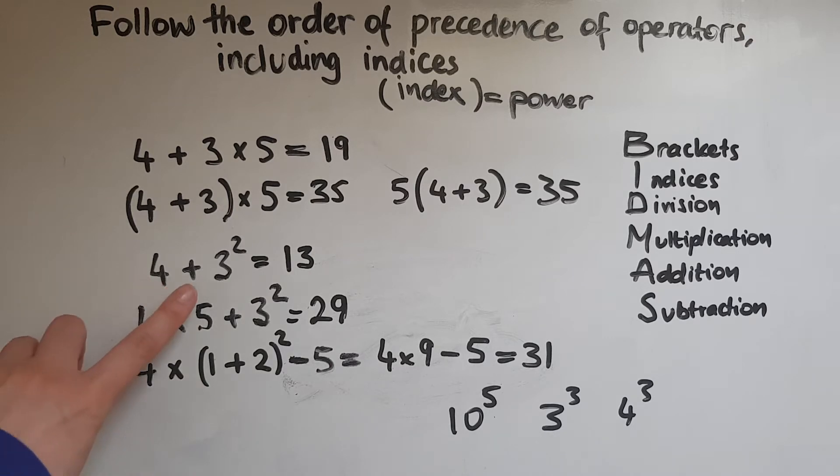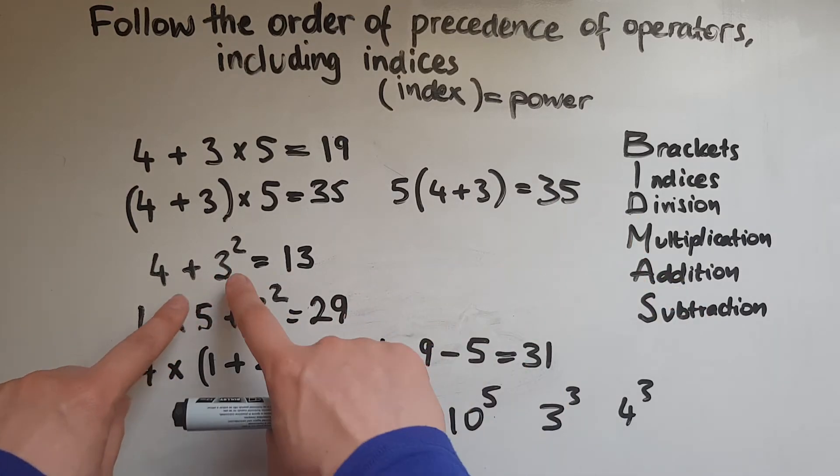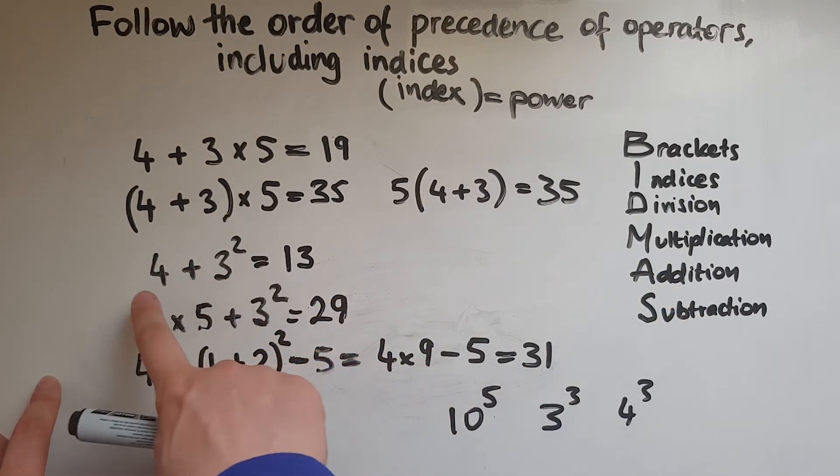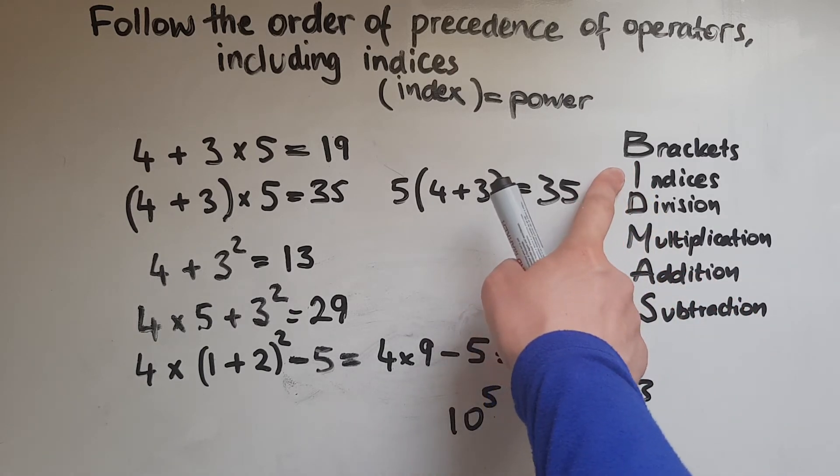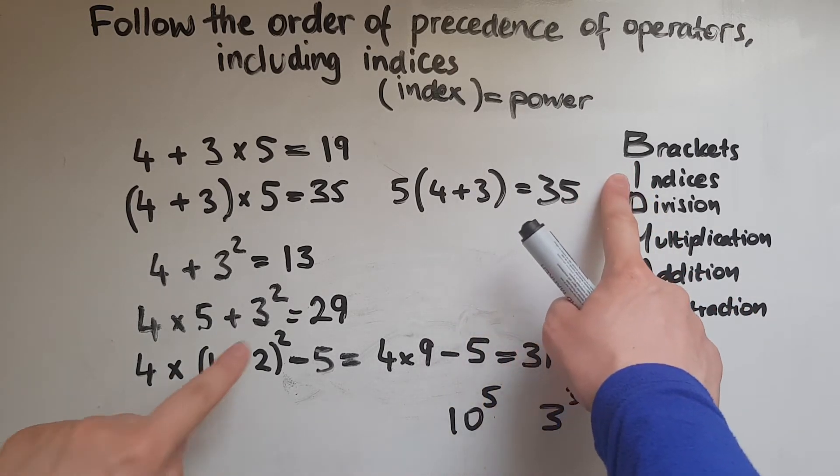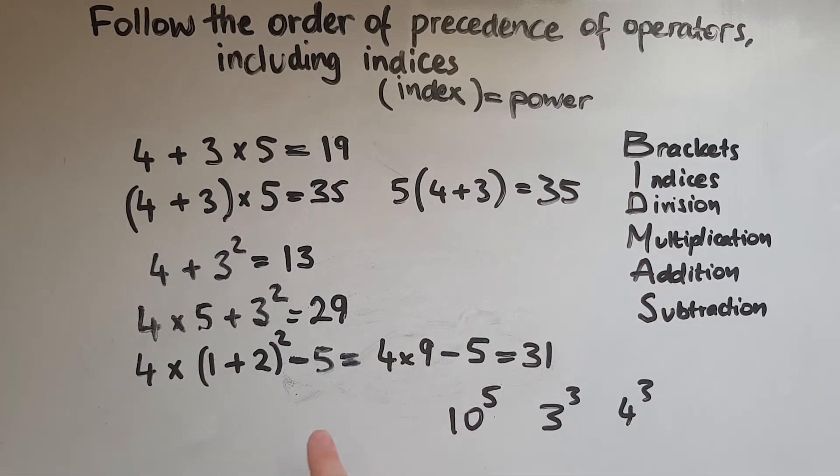And then here we've got addition and we've got a power, index. So index must come first. So I must do 3 squared first, which gives me 9, add then 4 to give us 13. And here we've got multiplication, addition and indices. That's indices, that's multiplication, that's addition. So indices come first. So we've got 9 and then we do multiplication. So we've got 20 plus 9 or 20 add 9, which gives us 29.